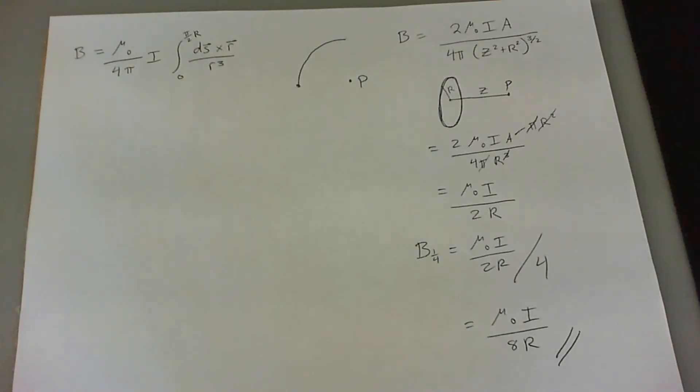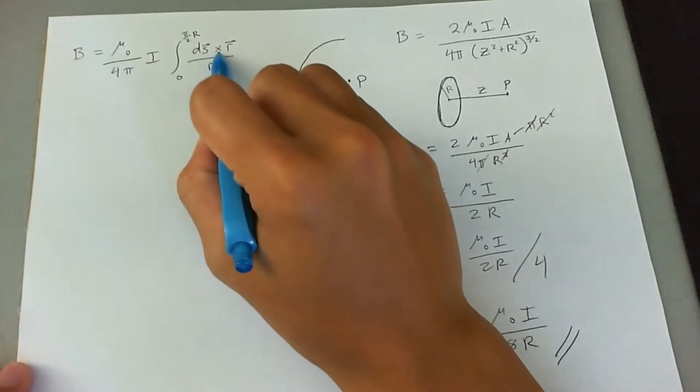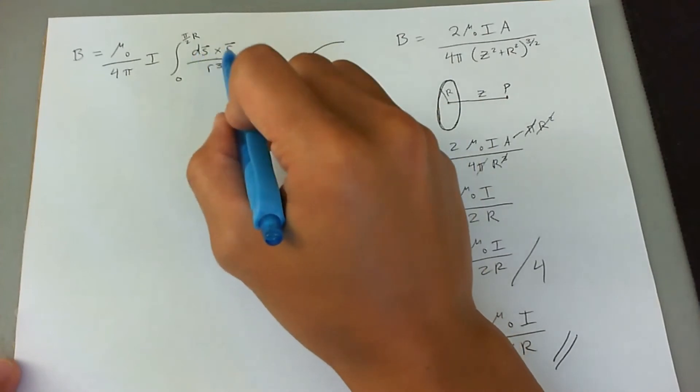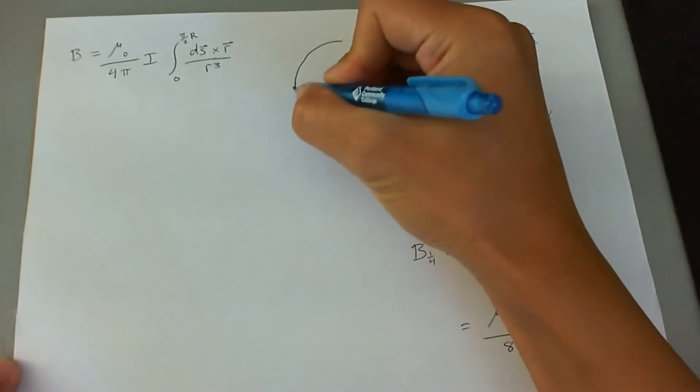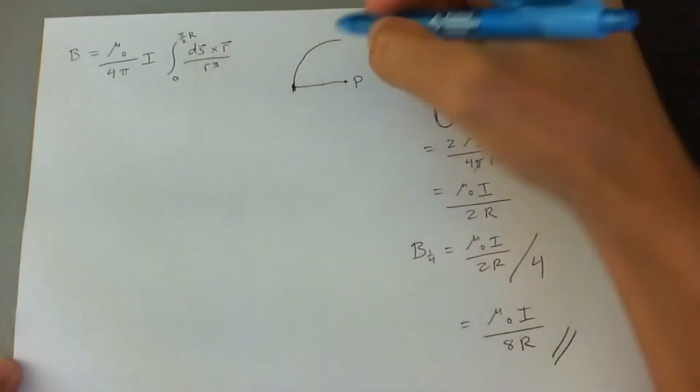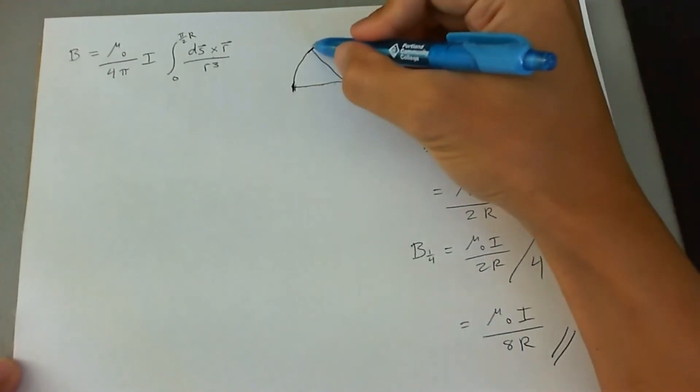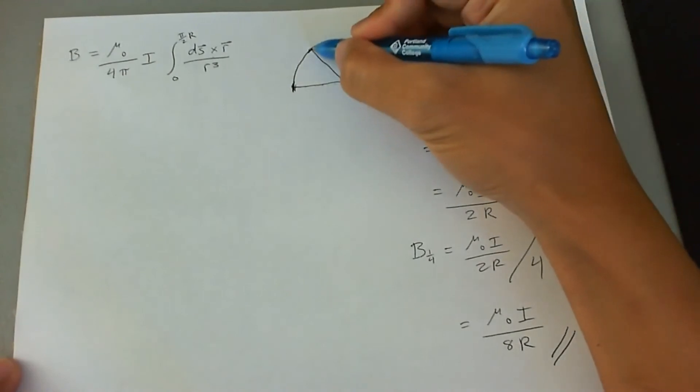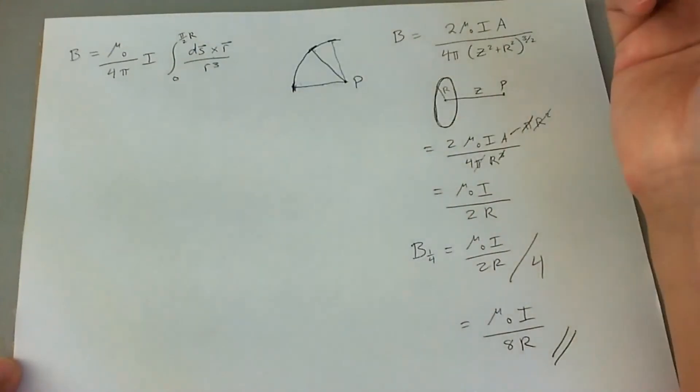Let's analyze the cross product because that's the first thing you want to get rid of. This is going to be ds r sine theta, except the r and the ds infinitesimal line are always perpendicular to each other. If this is r, this is going to be the ds fragment. They're always going to be perpendicular to each other, so this cross product is as good as dead.